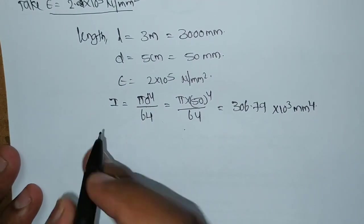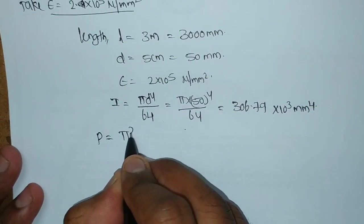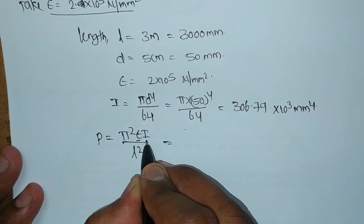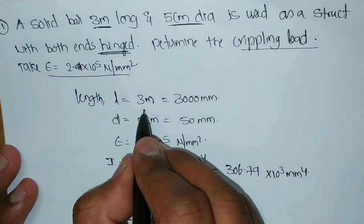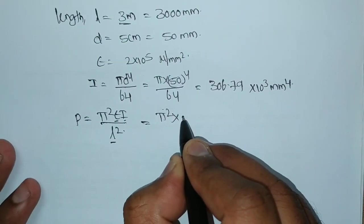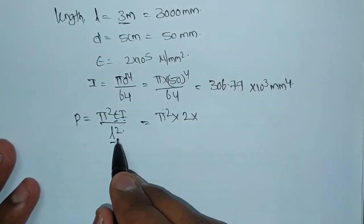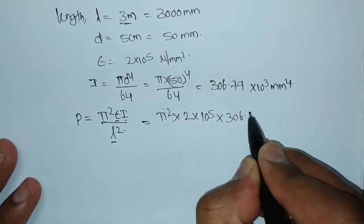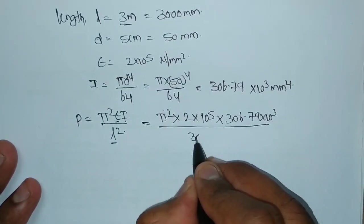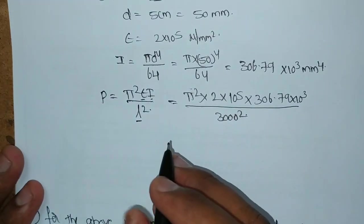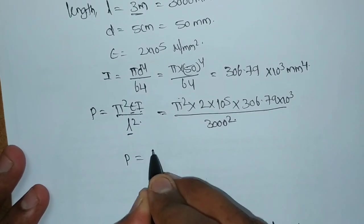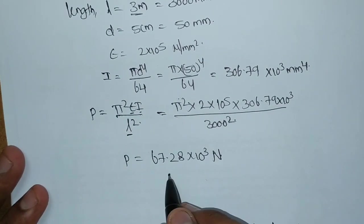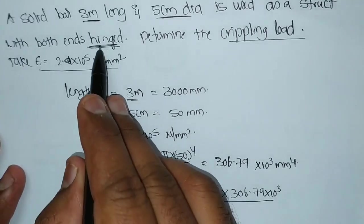Now we have to find out the crippling load. For any type of section, the crippling load formula with respect to effective length is Pi squared EI by L squared. For both ends hinged, the formula is Pi squared EI by L squared. Substituting: Pi squared into 2 into 10 to the power of 5 into 306.79 into 10 to the power of 3, divided by 3000 squared. Calculating gives 67.28 into 10 to the power of 3 Newtons. This is the crippling load when both ends are hinged.